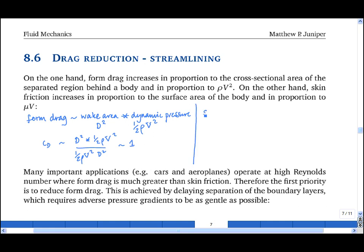On the other hand, skin friction scales with the skin surface area times the wall shear stress. Using a scaling argument, skin surface area is d squared. The wall shear stress is tau, which I shall write as mu dv by dr, where r is the radius. And using a scaling argument, this is d squared times mu v upon d.